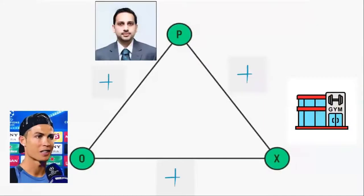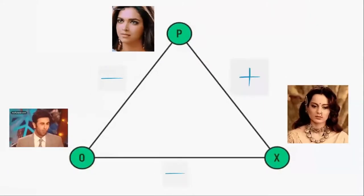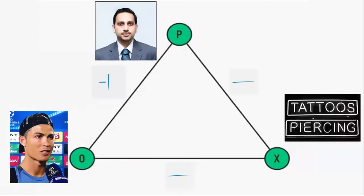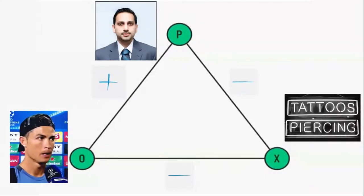So how is it applied from a marketing perspective? An example of a balanced relationship would be: I like Ronaldo, I like going to gym, Ronaldo likes going to the gym - so all positives, there is psychological harmony. Alternately, if I like Ronaldo, Ronaldo does not like tattoos, and I also do not like tattoos, this would also be balanced. P plus O, P minus X, O minus X - so two negatives, one positive, it is balanced.